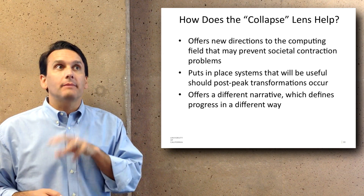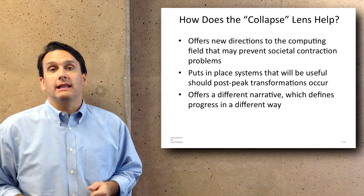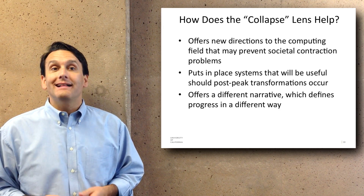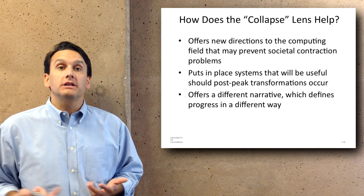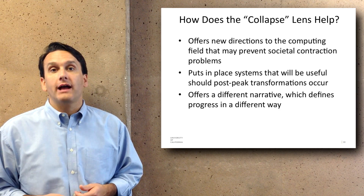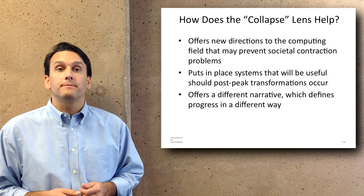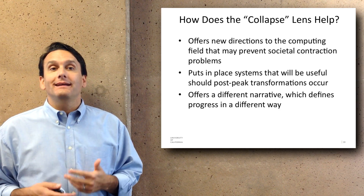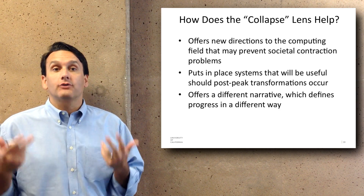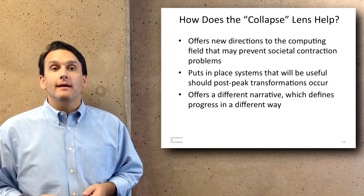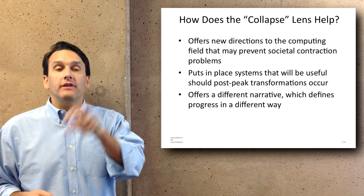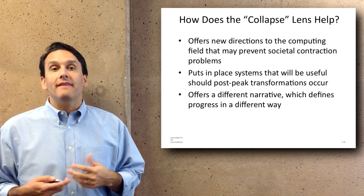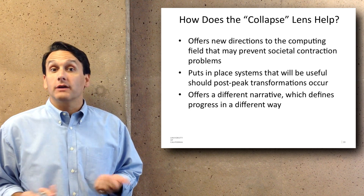We'd like to start thinking about some of these problems through a collapse lens, which can hopefully offer new directions for the computing field to help us avoid the challenges of societal contraction before they start to happen. We want to put in place systems that'll be useful in the event that post-peak transformations start occurring, and thinking about things in the light of collapse can offer a different narrative — one that allows us to define progress in a different way.